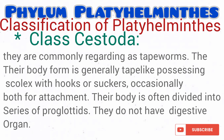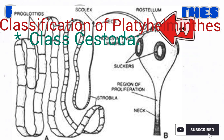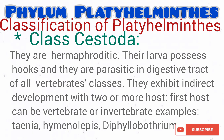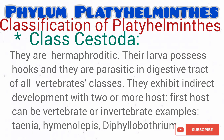The last class is Class Cestoda. The cestodes are commonly regarded as the tapeworms. This name is because of their tape-like shape, possessing scolices with hooks or suckers — occasionally both — for attachment. As you can see on the diagram, you can see the tape-like shape of the cestode, the suckers, and the hooks. They do not have a digestive system; they are parasitic and absorb nutrients from the host's gut. Their body is divided into a series of proglottids. Cestodes are usually hermaphroditic and have indirect development, possessing two or more hosts. They are parasitic in the digestive tract of all vertebrate classes. Examples include Taenia genus, Taenia solium, Taenia saginata, and other organisms.